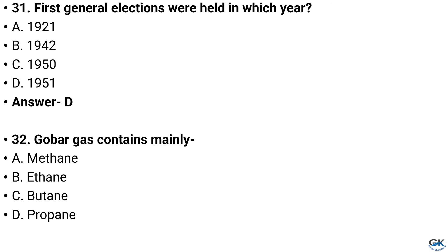Question number 32. Gobar gas contains mainly — Option A: Methane, Option B: Ethane, Option C: Butane, Option D: Propane. And the answer is Option A: Methane.